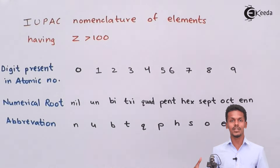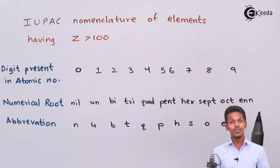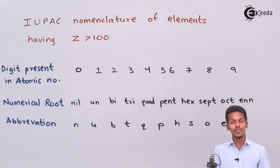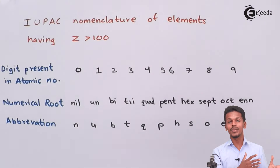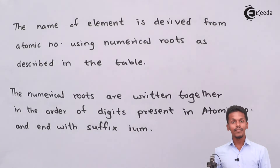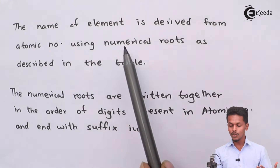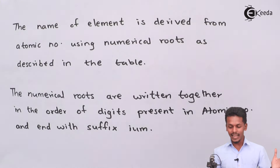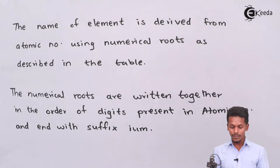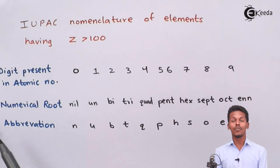This is what we need to know — what each digit represents when it comes to the IUPAC name of a particular element with atomic number more than 100. We will use this table as our reference to easily name the IUPAC name of any atomic number greater than 100. The name of the element is derived from its atomic number using the numerical roots described in the table.